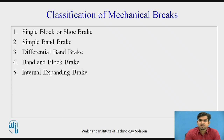The classification of mechanical brakes: the first one is single block or shoe brake, the second one is simple band brake, the third one is differential band brake, the fourth one is band and block brake, and the fifth one is internal expanding brake. We will see all these five types one by one.